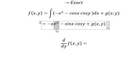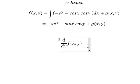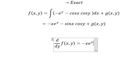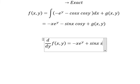Taking the derivative of f with respect to y: we keep xe^y the same, for cosy we have negative siny, and we have positive sinx siny plus dg/dy.